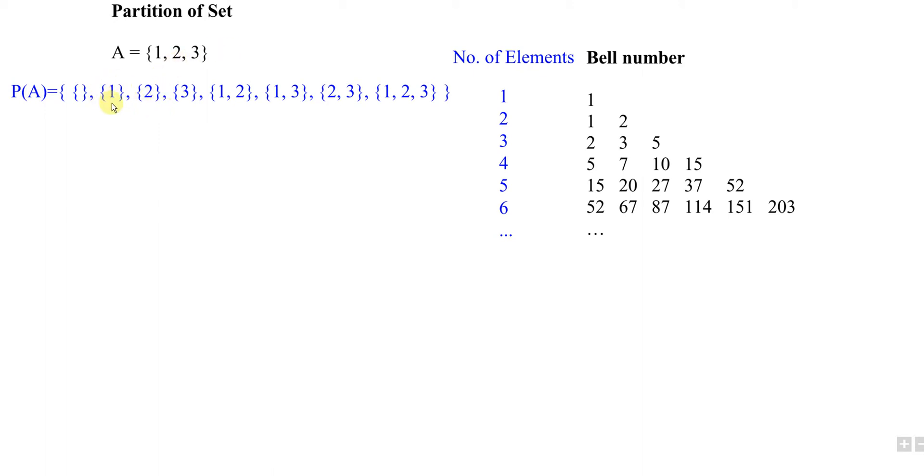For example, if we take the subset {1}, then we will have {1}, {2}, and {3}. We can see all these elements are included in only one subset, meaning not repeated, and all elements are involved. This is what we call a partition.